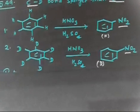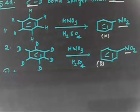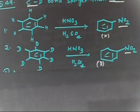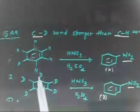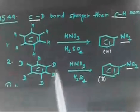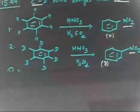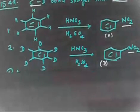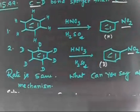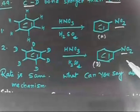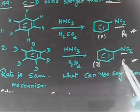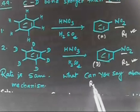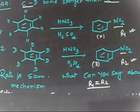Now, can anybody tell me what the question should be? The question has to be something related to carbon-hydrogen versus carbon-deuterium bonds. Indeed, the question is: the rate of these two reactions is measured. The rate of nitration of benzene-H is R1, and the rate of nitration of benzene-D is R2. From experiment it is found that R1 equals R2.